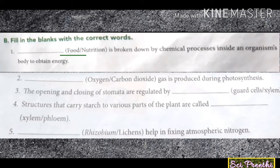Second question: — gas is produced during photosynthesis. Plants take in carbon dioxide and release oxygen, so the answer is oxygen.